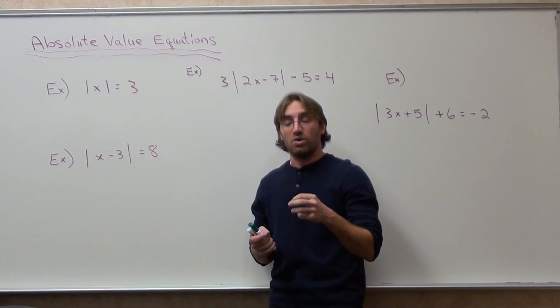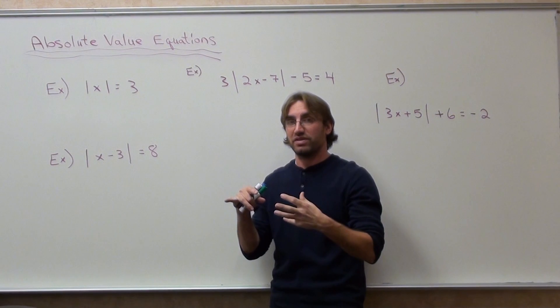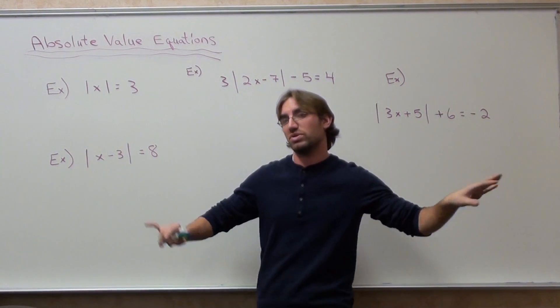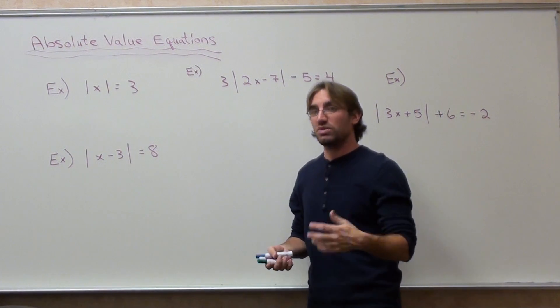For instance, when you're talking about the absolute value of three, you could be talking about its distance on a number line both ways, three and negative three. And that's essentially what we have to do here.